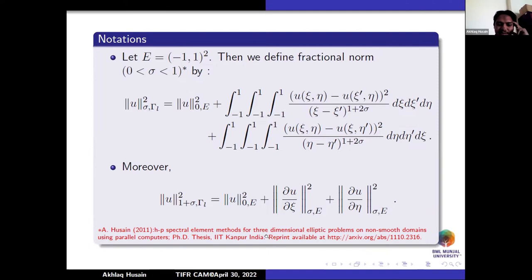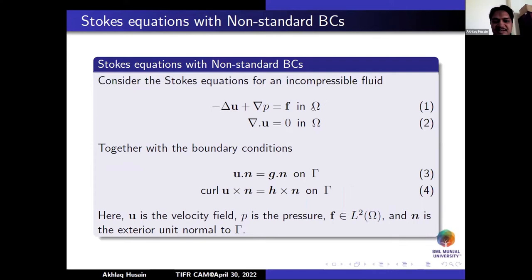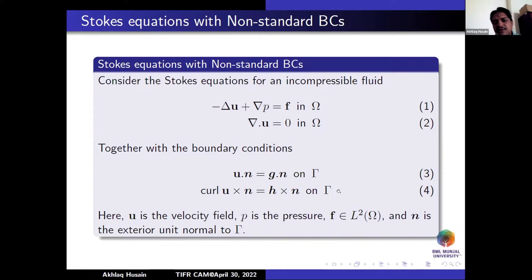Consider the stationary Stokes equation: −ΔU + ∇P = F with the continuity equation, together with the boundary conditions U·n = G·n on part of the boundary and curl U × n = χ × n on the other part. On some part of the boundary we apply the first boundary condition (equation 3), and on the other part we apply condition (equation 4). These do not fall into the category of standard Dirichlet, mixed, or Neumann boundary conditions.